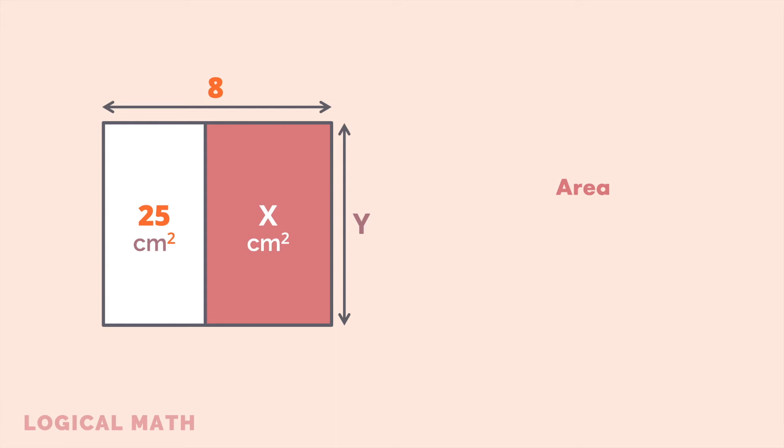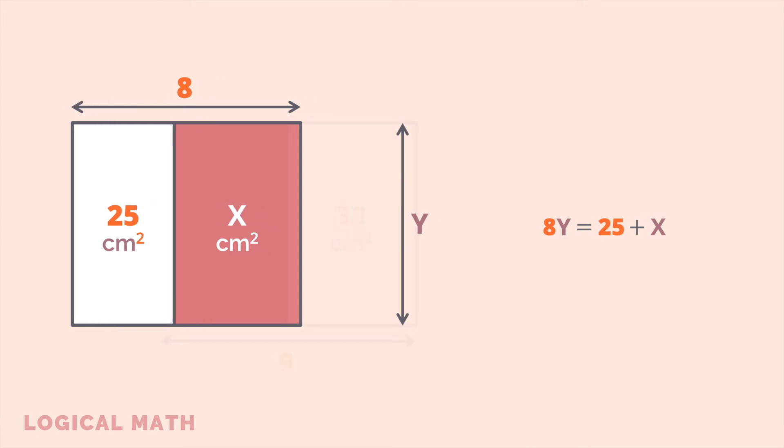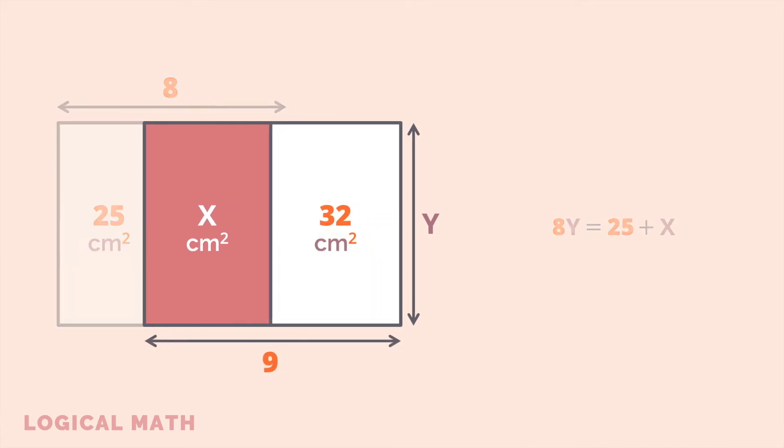But we can also get the area by adding areas of these rectangles together. As the two values are identical, we have the following equation: 8Y = 25 + X.